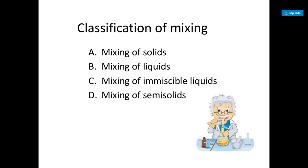Coming to the classification of mixing: we have mixing of solids, where two dissimilar solids are mixed; mixing of liquids, where two liquids are mixed; mixing of immiscible liquids - in the last class I asked what formulation consists of two immiscible liquids and your answer was correct: emulsion. So mixing of immiscible liquids is also a type of mixing. Next is mixing of semi-solids.